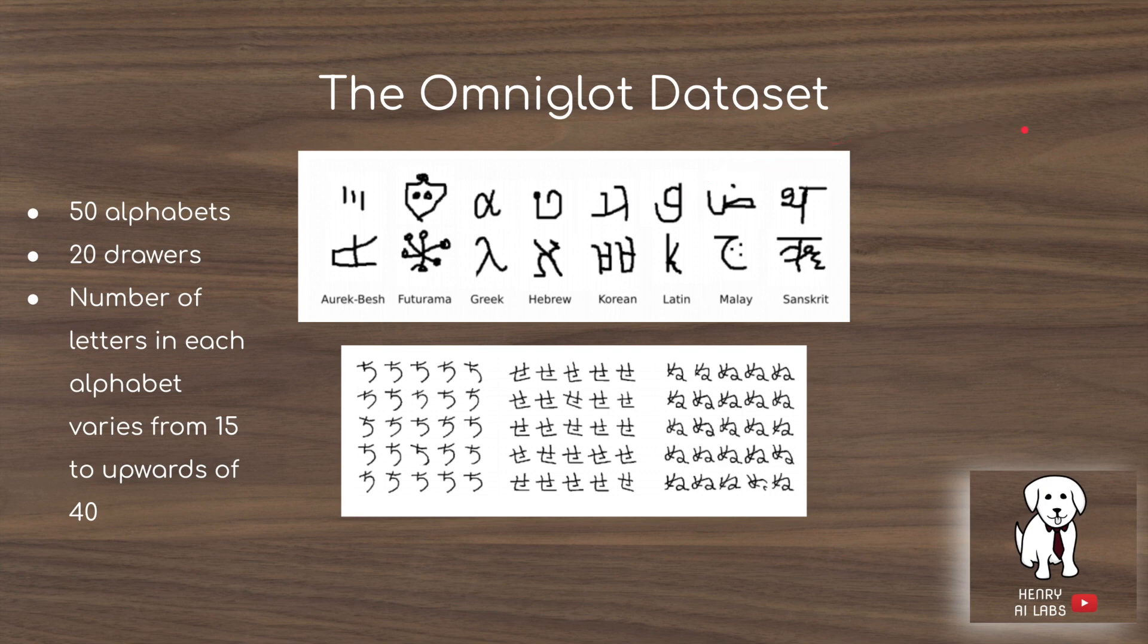The Omniglot dataset is the academic dataset used to benchmark one-shot classification. There are five tasks, and in a recent three-year report on Omniglot, the authors are a little disappointed that only the first task has been focused on so heavily, but it is still interesting. We'll focus on this first task.